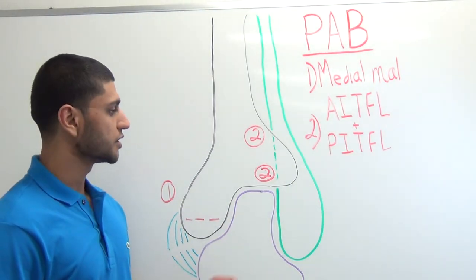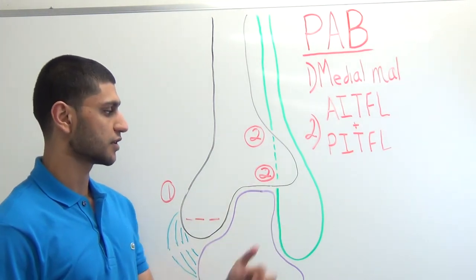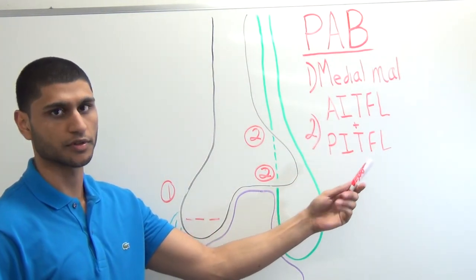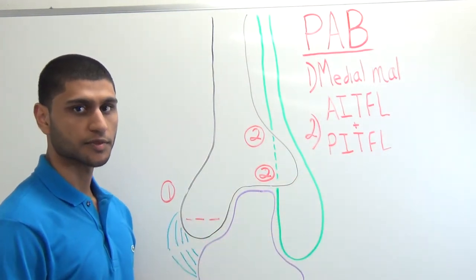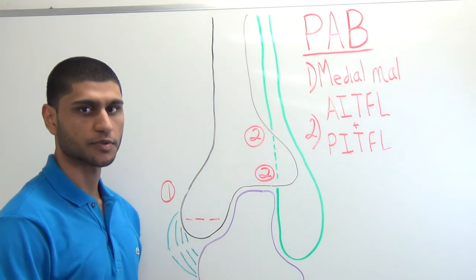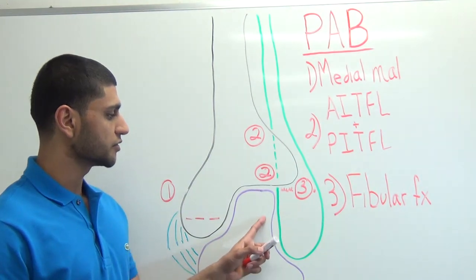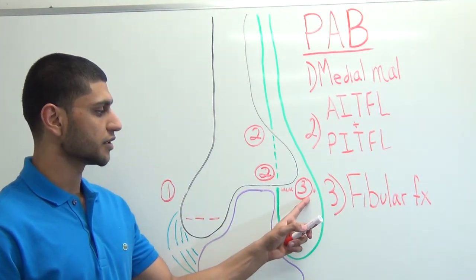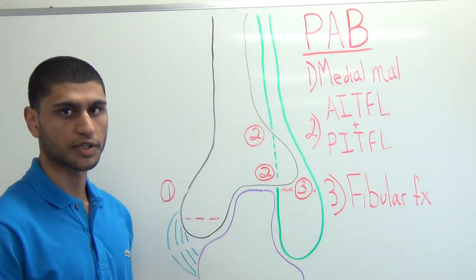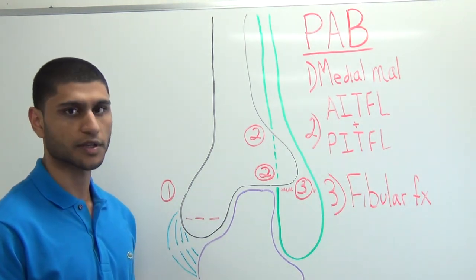In PAB2, the talus everts and is driven dorsally and laterally into the syndesmosis, simultaneously injuring the anterior and posterior inferior tibiofibular ligaments. In some cases you might see an avulsion fracture off the posterior tubercle of the tibia — a Volkmann's fracture. Finally, in PAB3, as the talus continues to evert, the lateral malleolus will bend dorsally, causing a comminuted compressive fracture at the level of the ankle joint, making this a Danis-Weber B. Some clinicians call this a butterfly fracture.